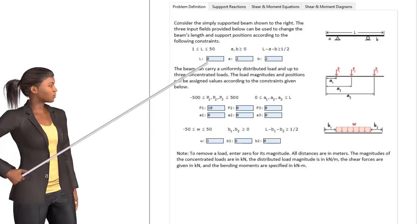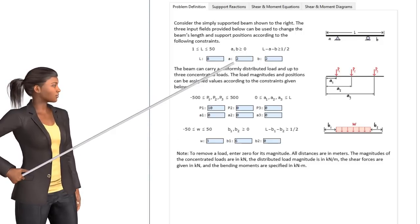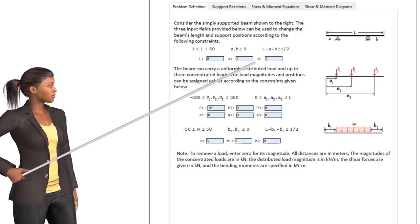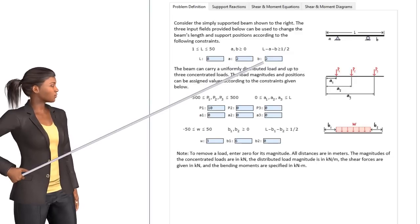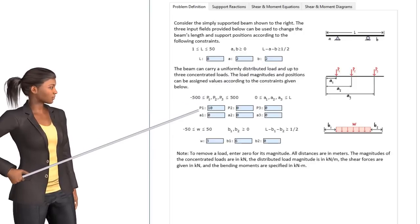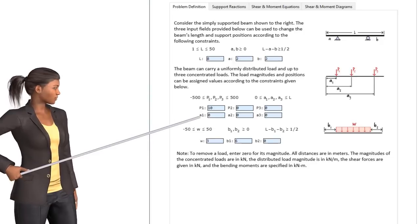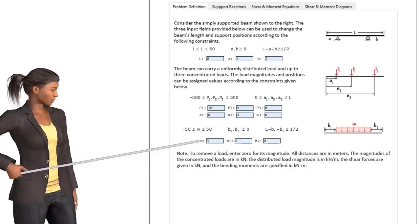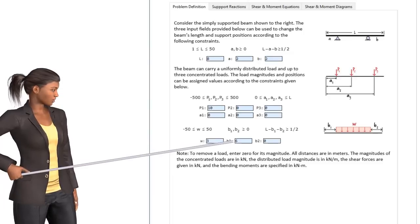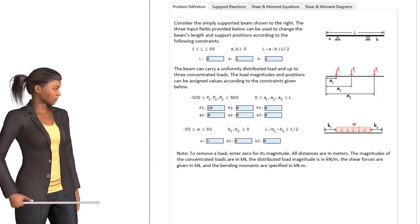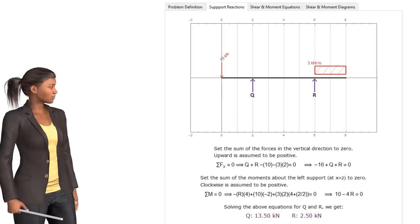Our beam has a length of 8 meters. The left support is located 2 meters from the left end of the beam. The right support is placed 2 meters from the right end of the beam. The beam is subjected to a point load at 10 kN at x equals 0. And there is a uniformly distributed load with a magnitude of 3 kN per meter placed 6 meters to the right of the origin.